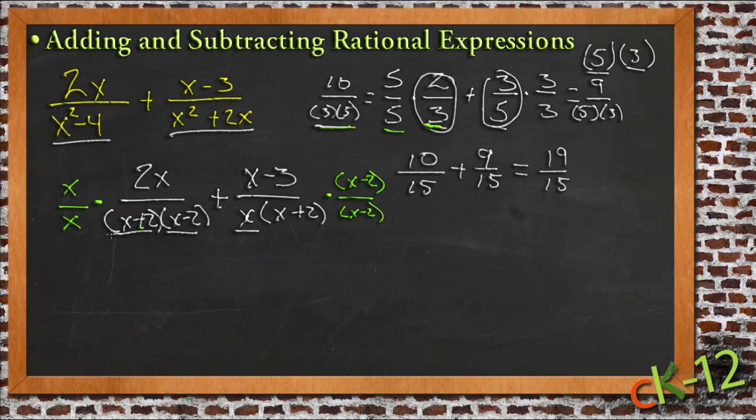Now I'll have the same denominator for both of them. It will be x times (x+2) times (x-2), same thing here. So my new common denominator all the way across will be x(x+2)(x-2).